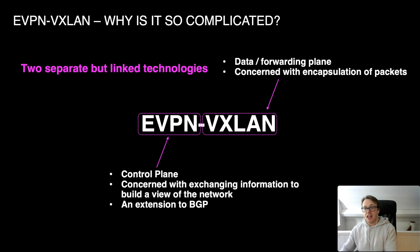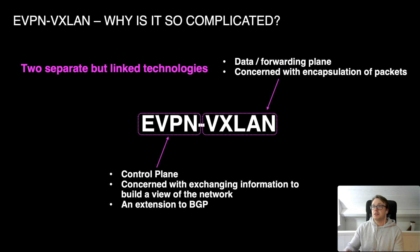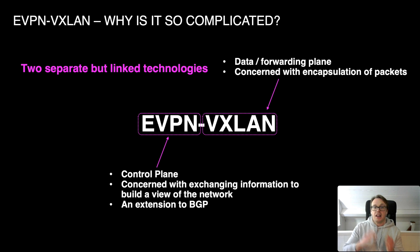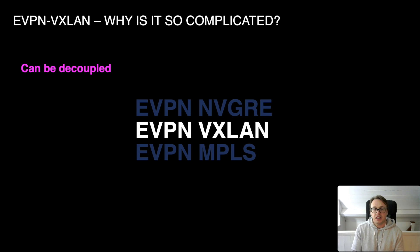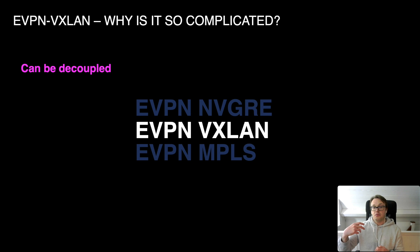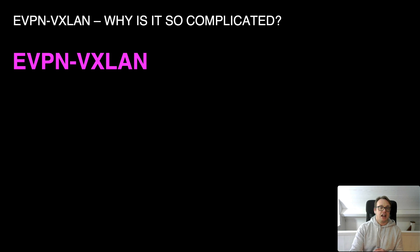Moving on to VXLAN: this sits in the data plane, which is the part of the networking device concerned with sending packets through the device — what headers to put on the data, and the encapsulation of packets. So: EVPN = control plane, VXLAN = data plane. They can be decoupled. EVPN VXLAN is the most popular implementation, but EVPN as a control plane can be used with different data planes such as NVGRE, MPLS, or MPLS over GRE.